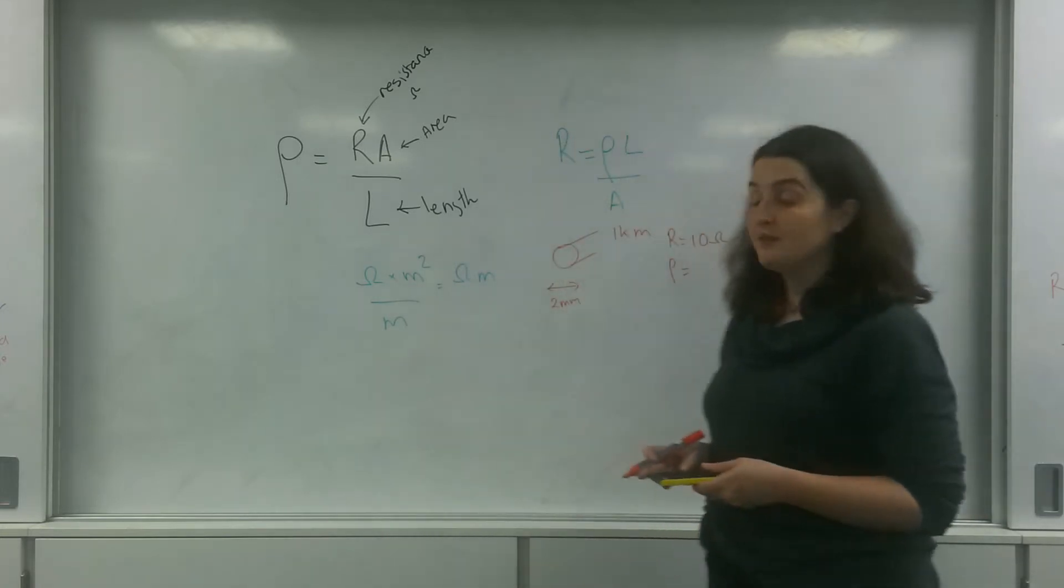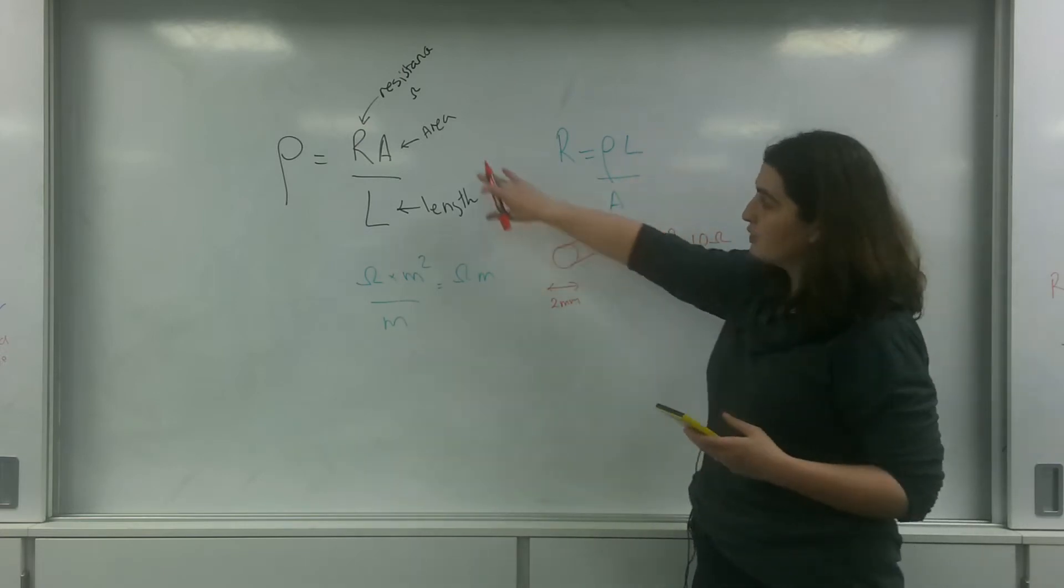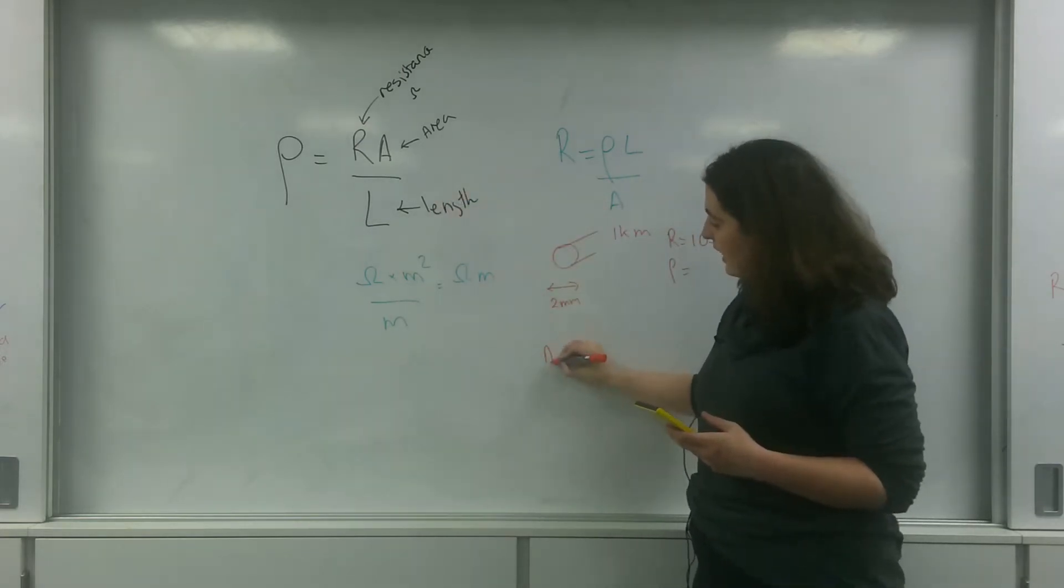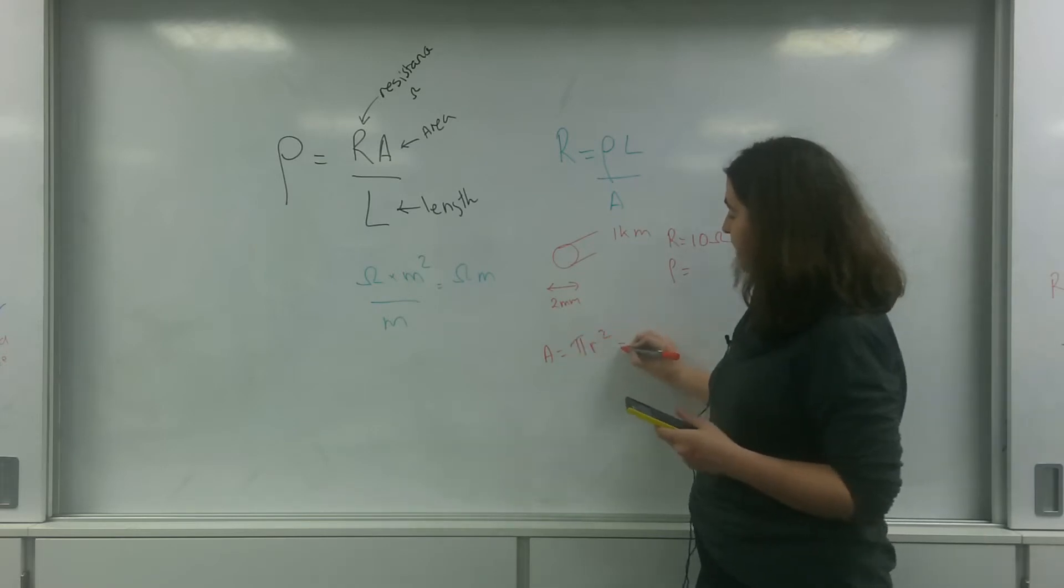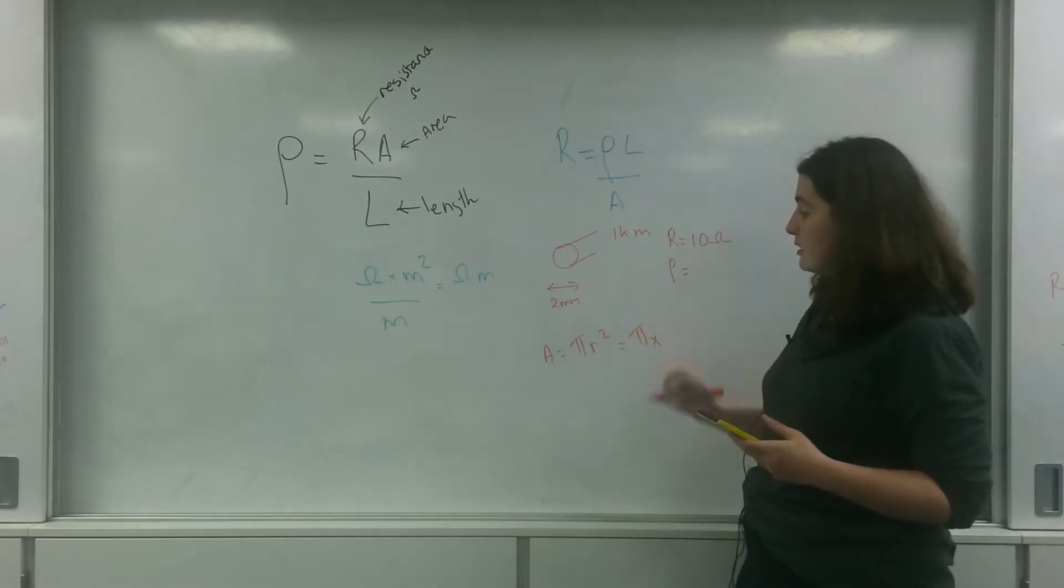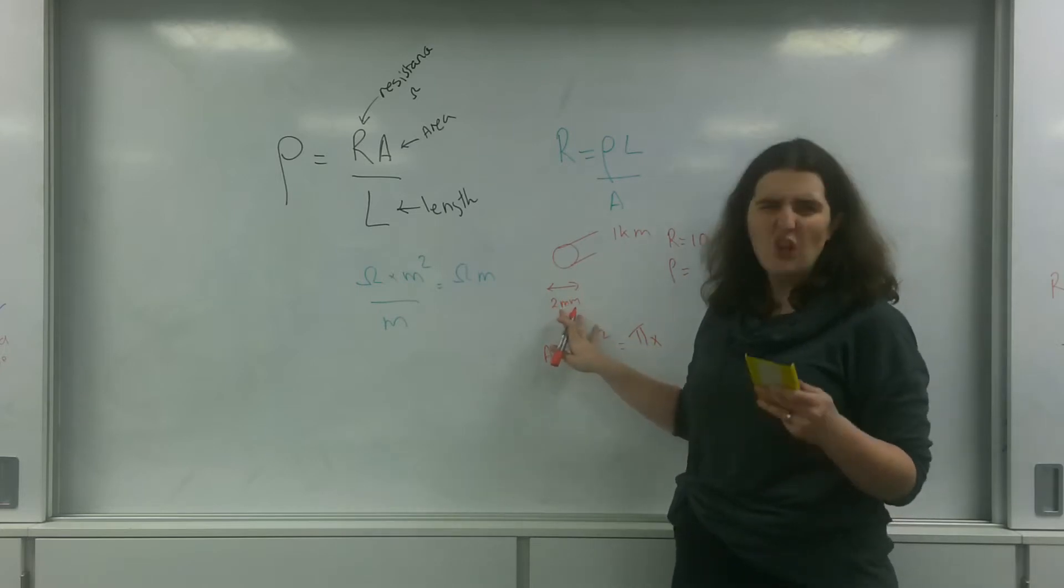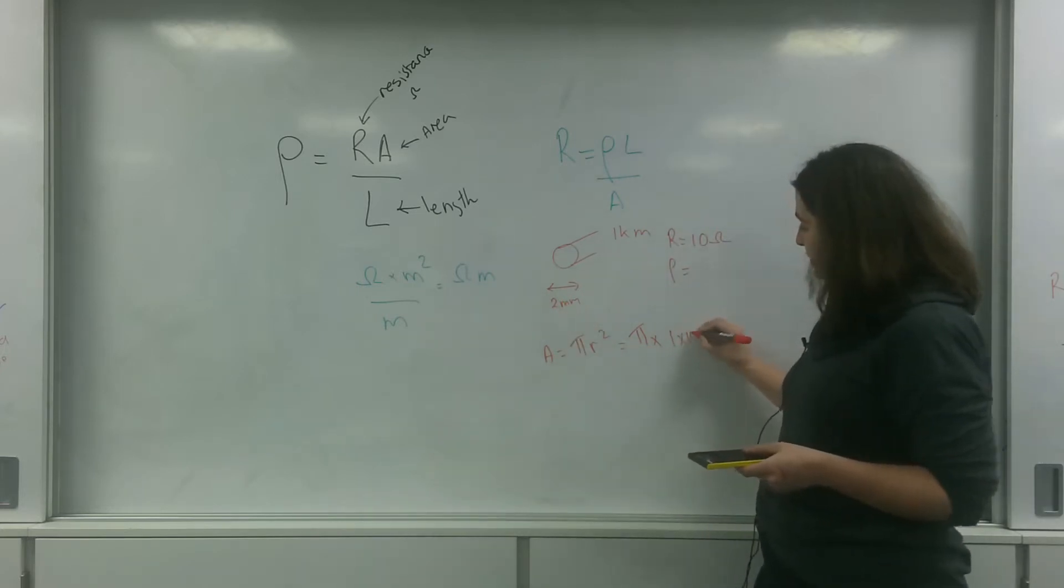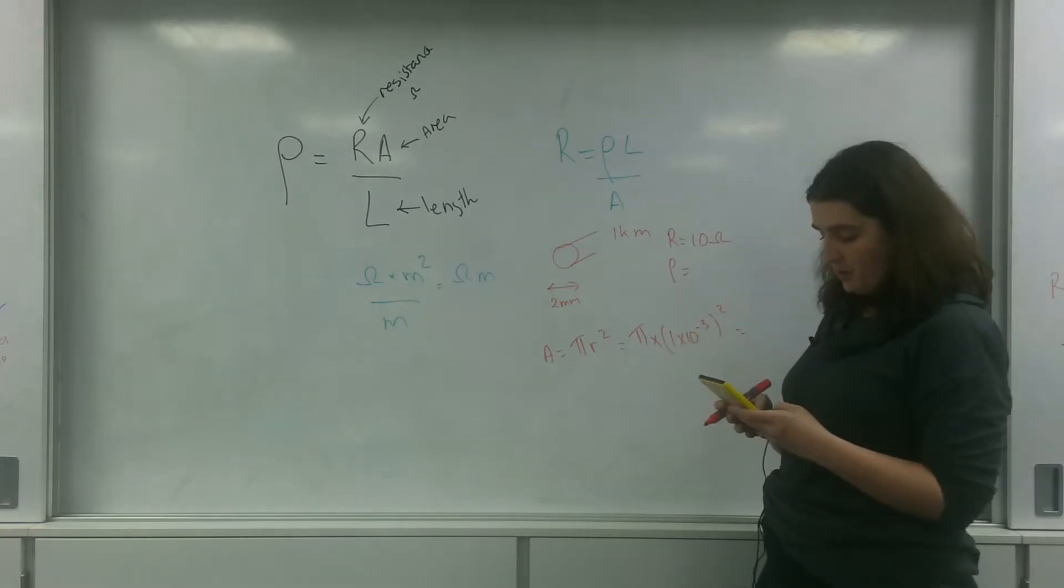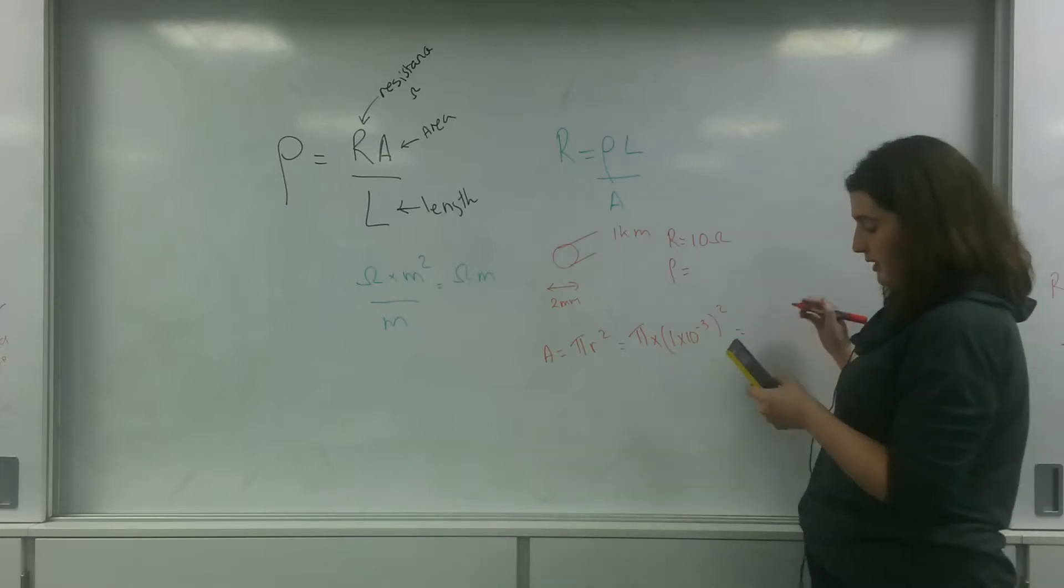So first of all, I need to find my area here. So I'm going to use this formula here. So the area, it's a circle. So pi r squared. So that's pi times r. So that's the diameter. And I like doing that. So please be aware. 1 times 10 to the minus 3 squared. So 1 squared times pi, pi is 3.14 times 10 to the minus 6 meters squared.